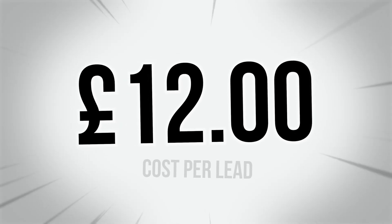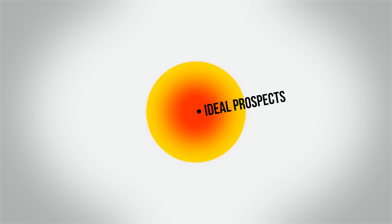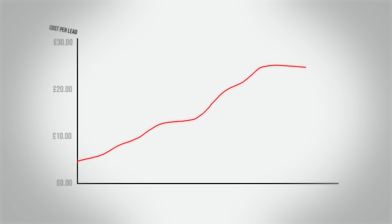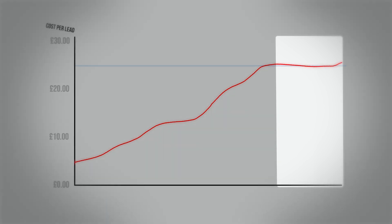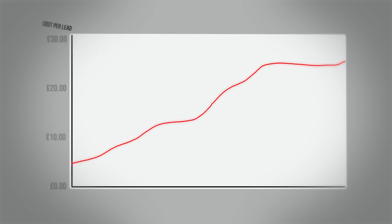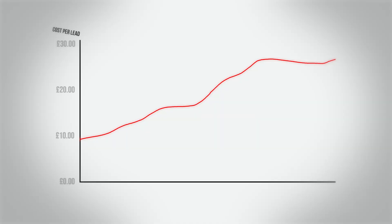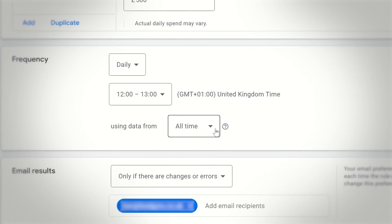Let's say you run this campaign and it's performed really well for a couple of months at £12 cost per lead. As the campaign scales, Google keeps running the rule daily looking at the all-time average, which stays low even if your recent cost per lead has risen to £25. That can lead to your budget increasing when it shouldn't be — perhaps because your ads are fatigued, or display or YouTube ads within a Performance Max campaign need adjustments. You don't want to keep spending more money in that situation.